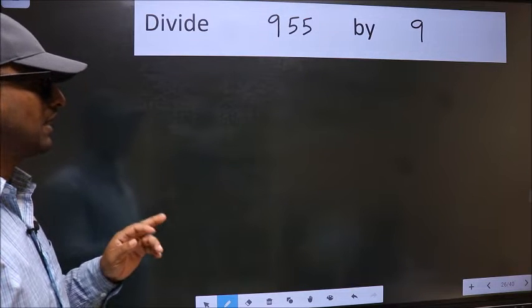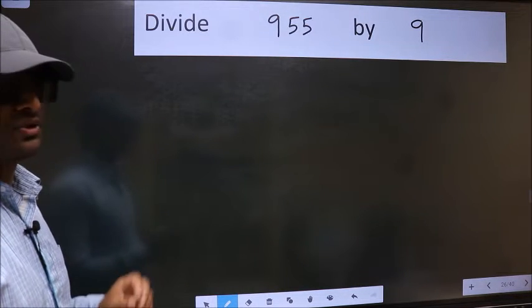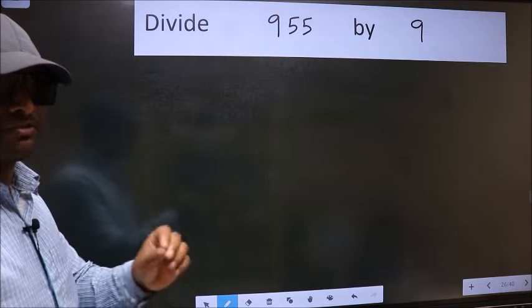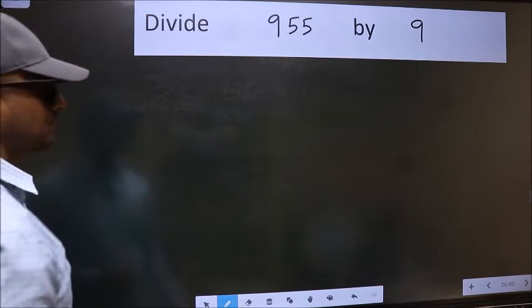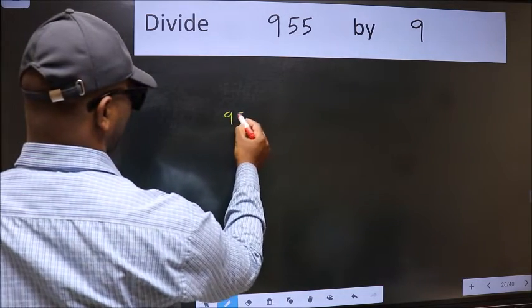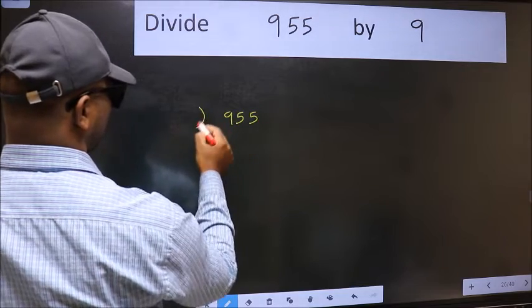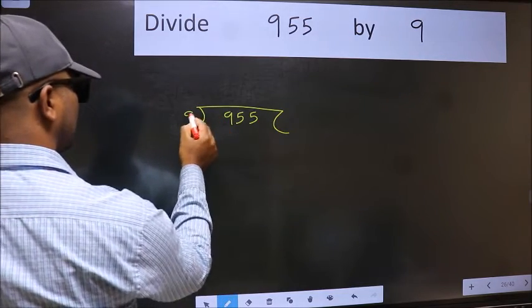Divide 9.55 by 9. To do this division, we should frame it in this way: 9.55 here and 9 here.